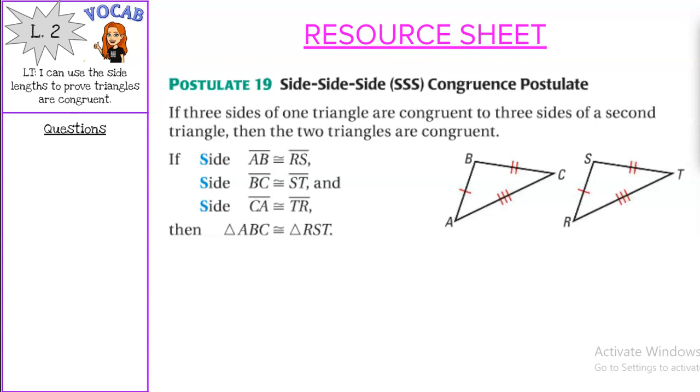The first shortcut is side-side-side, so it's only three things that you have to prove are congruent. If we can prove that all three sides are congruent to three sides of a second triangle, then the two triangles are congruent.